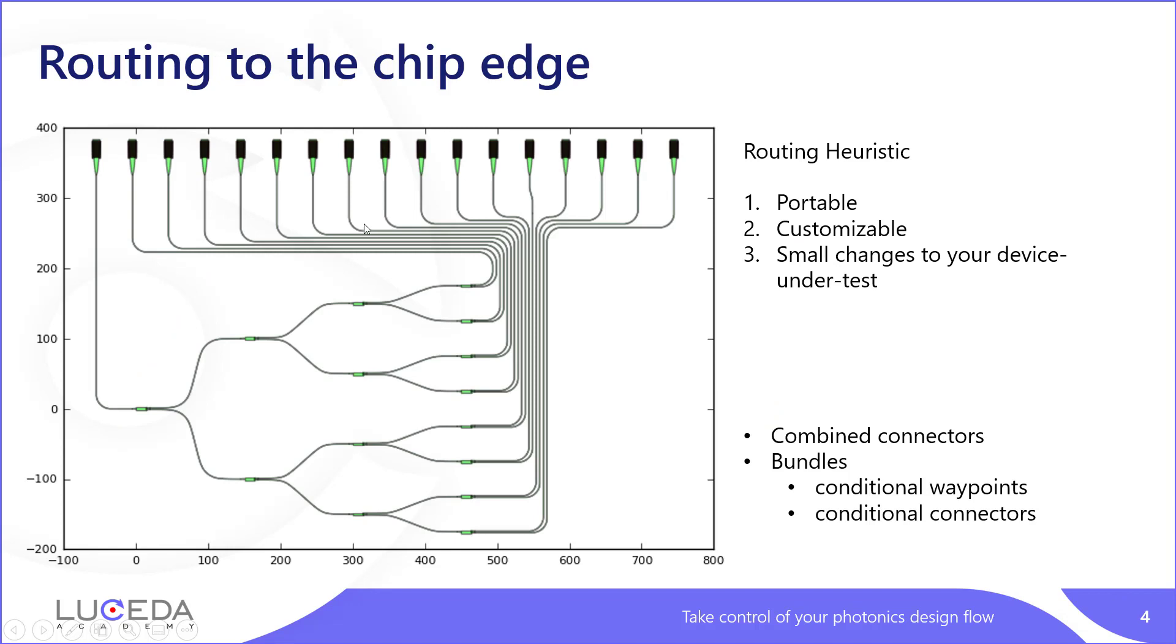But when it comes to routing to the chip edge, things get a bit more complicated. As you can see, depending on where you are in this bundle, your routing strategy is different. Here you route to the left and have waypoints that decrease. Here you have an S-Bend at the end, while you have a Manhattan first, and then here you route to the right.